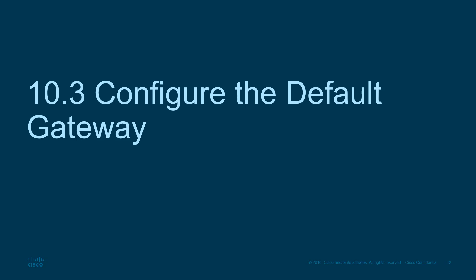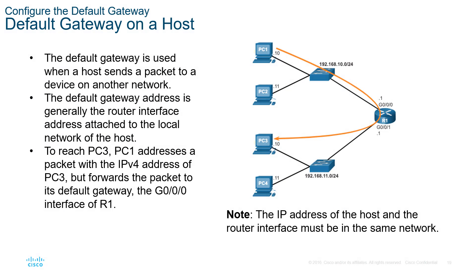Moving on — how do we configure an IPv4 default gateway? Remember, the default gateway is the exit out of our LAN. Here we have two interfaces on the router — gig0/0/0 and gig0/0/1 — allowing two different networks. To communicate between these two networks, it has to go to a layer 3 device, which is going to be our router. The default gateway is our exit point for our network — again, it is going to be the router.